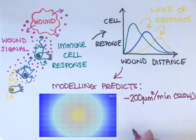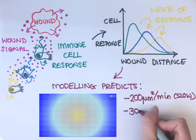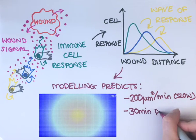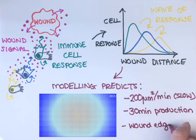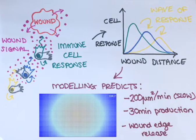We've also found that the signal is only produced for 30 minutes post-wounding, and it is most likely to be released from the wound edge rather than the entire area of the damaged tissue.